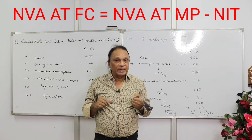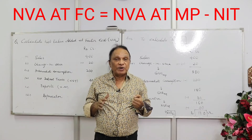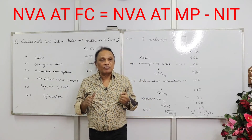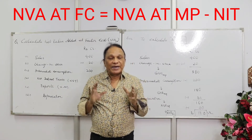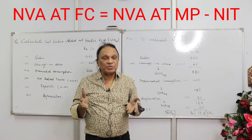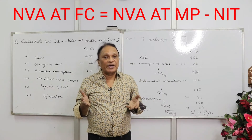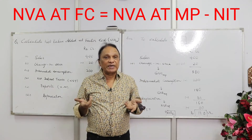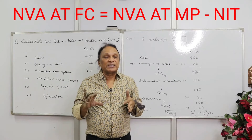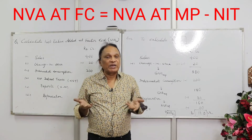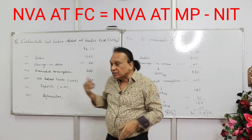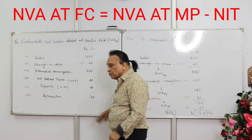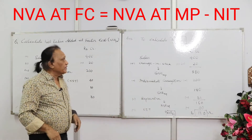To recap the formula: sales plus change in stock gives gross value of output; minus intermediate consumption gives gross value added at market price; minus depreciation gives net value added at market price; minus NIT gives net value added at factor cost. Now let's practically do one sum which came in one of the board exams.